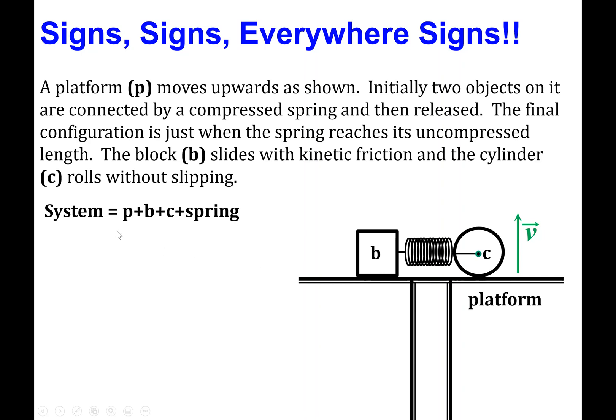The cylinder is going to have a static friction force between itself and the platform, and that'll allow us to talk about the cylinder as rolling without slipping. So just to review, our equation schematic describing our system says that the system is made up of the platform, the block, the cylinder, and the spring.